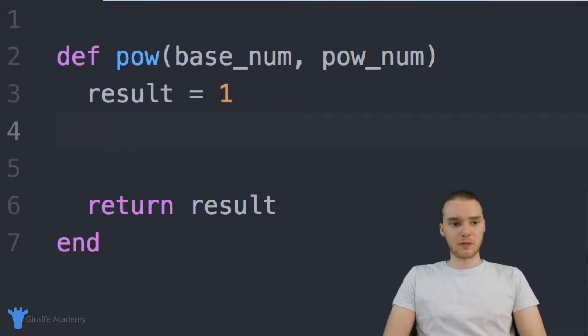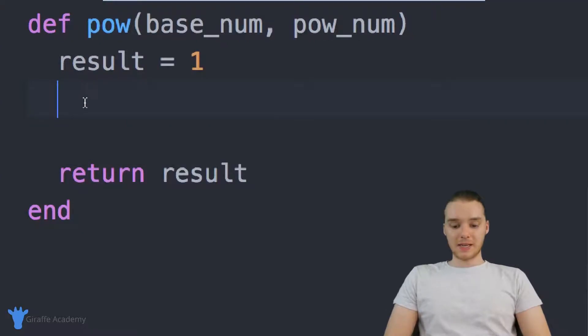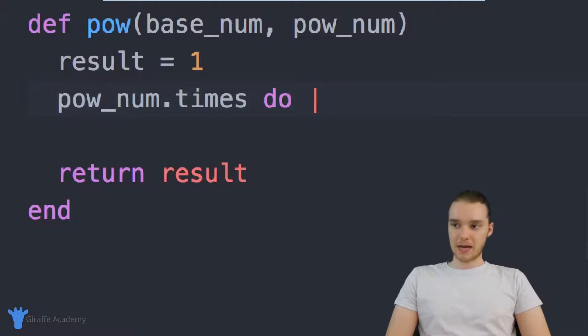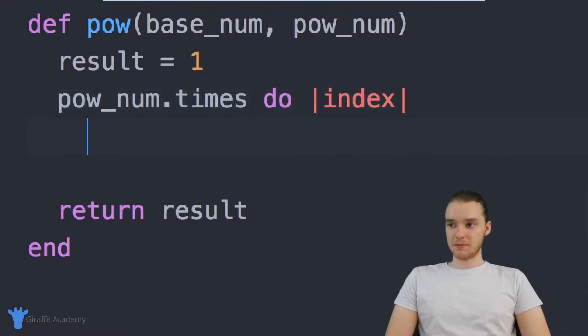So let's flesh out this for loop and then we'll kind of see how it's going to work. So I'm going to say pow_num dot times do. And basically, what we're going to do now is we can actually just pass in index. Now, I don't know if we're going to actually use this index, but it might be good just to pass it in anyway. And down here, I'm just going to end this off.